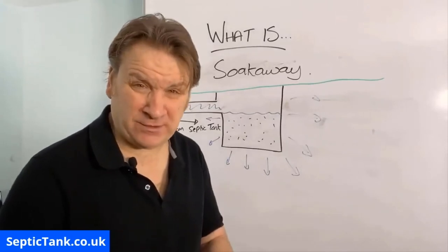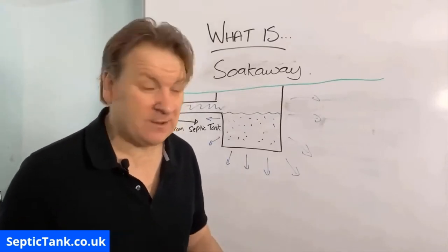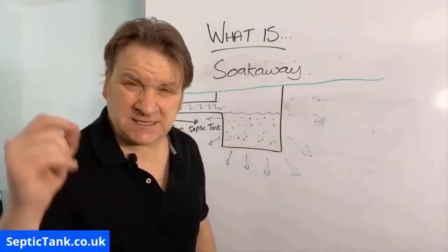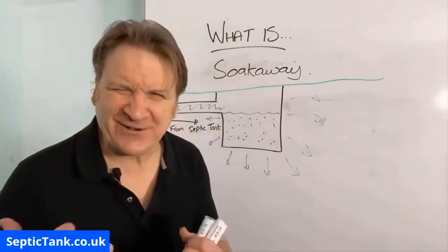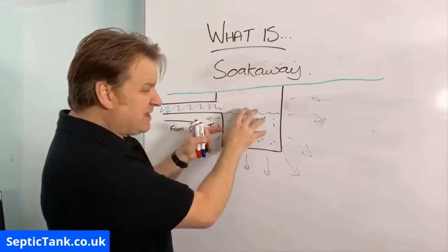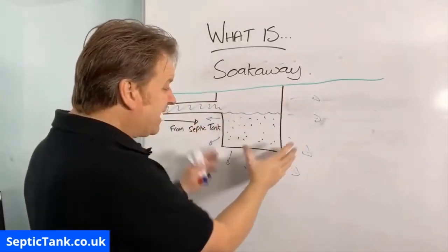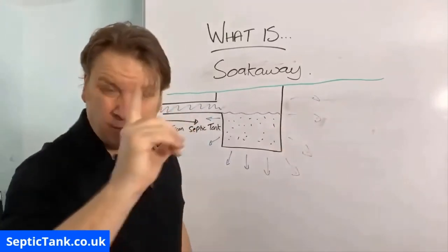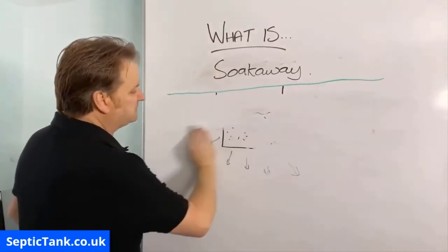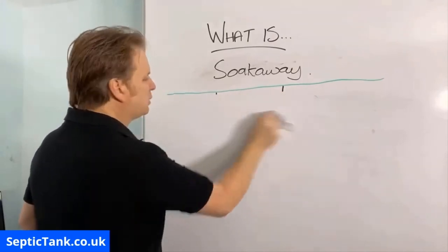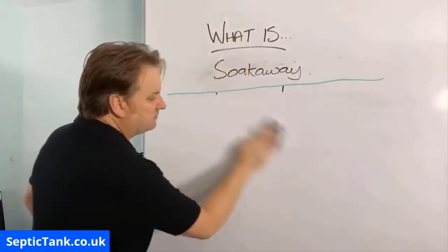The size of the soak away depends on the number of people using the septic tank — smaller for two people, much bigger for ten. It also depends on soil conditions: chalk or sand are the best mediums because water soaks away quickly. If surrounded by clay the soak away has to be a lot bigger. That's why there are different types of soak away design — including what's called a herringbone system.